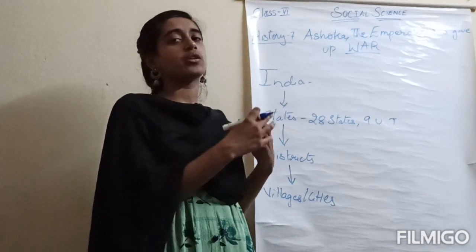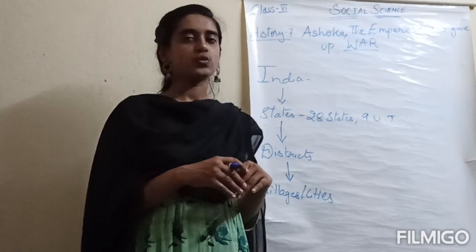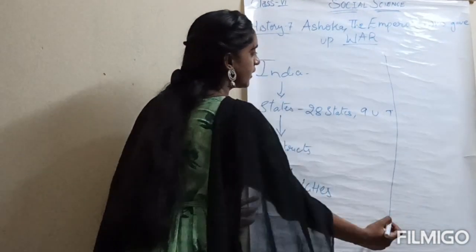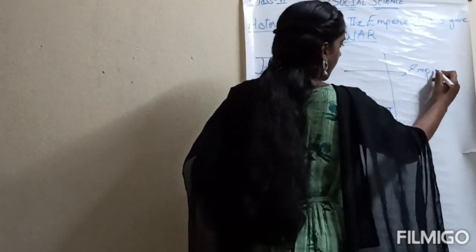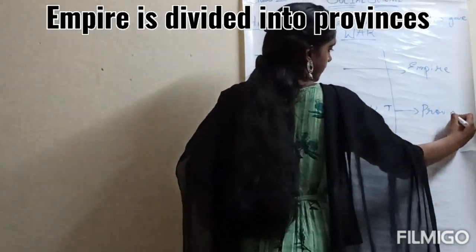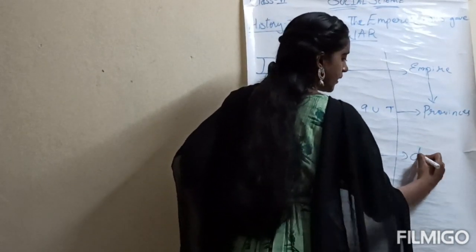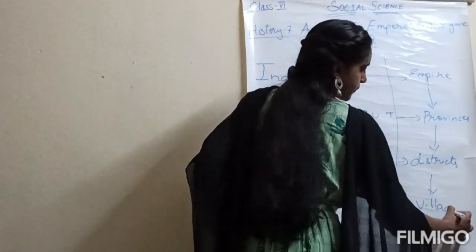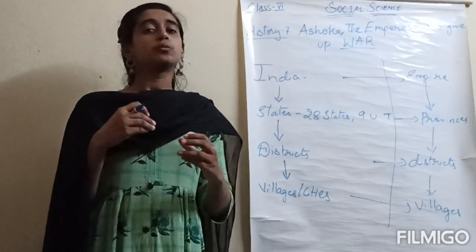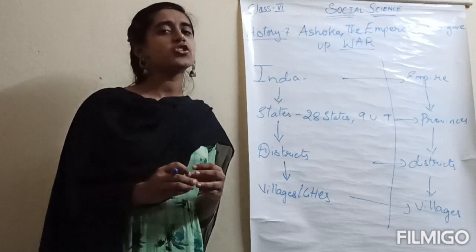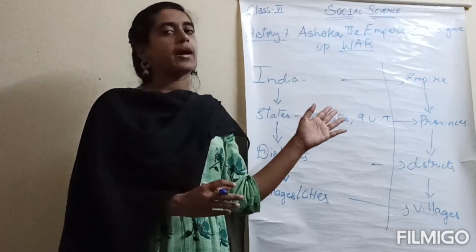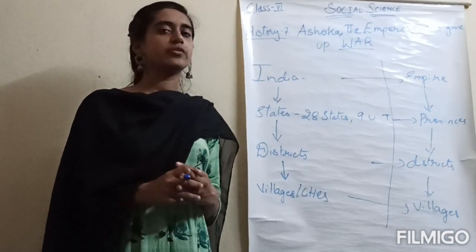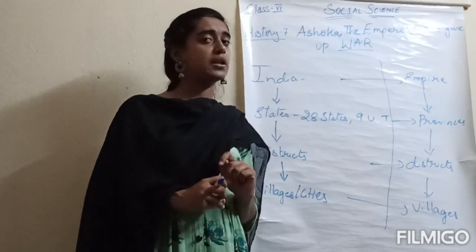In a similar way, the Mauryan Empire was administered. Just as we have India → states → districts → villages, in the Mauryan Empire we have: empire → provinces → districts → villages. They divided the empire into smaller parts so they could rule over it easily and without difficulties.